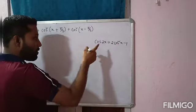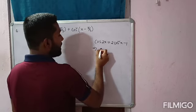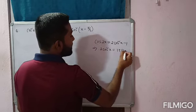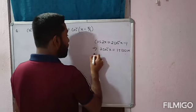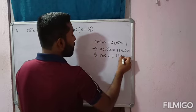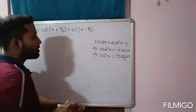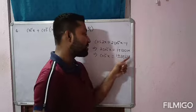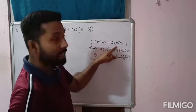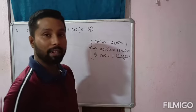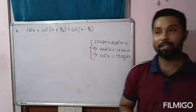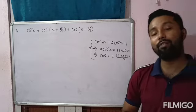We know cos 2x in terms of cos is 2cos²x − 1. Therefore, 2cos²x = 1 + cos 2x, or it can be written as cos²x = (1 + cos 2x) / 2. So cos²x can be replaced by (1 + cos 2x) / 2. Now, there is another relation cos²x = 1 − sin²x, but here there will be no use of that relation.